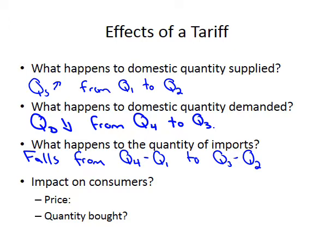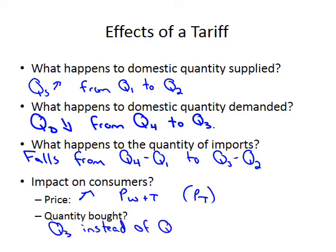The impact on consumers: the price went up to PW plus T (price with tariff). The quantity bought falls to Q3 instead of Q4. It's important to emphasize that the quantity bought is a combination of domestically produced goods and imports, since consumers are impartial between the two.